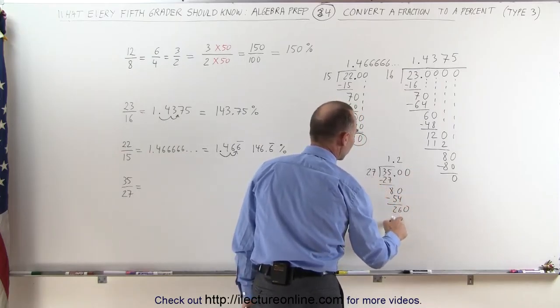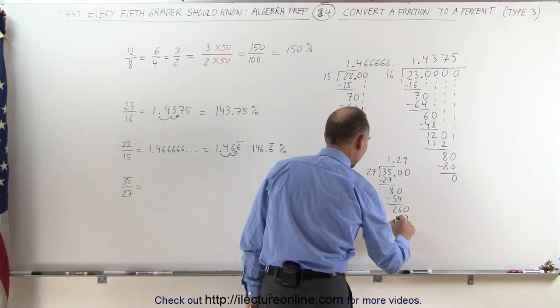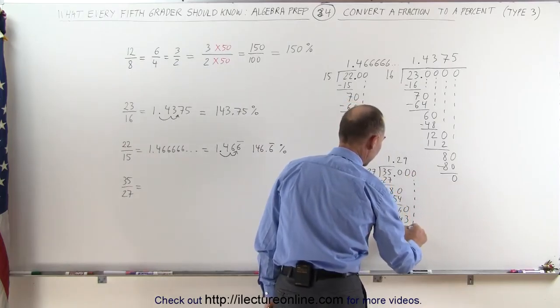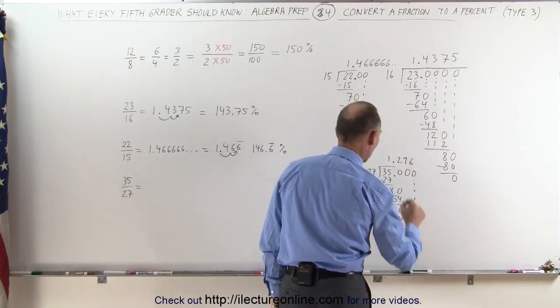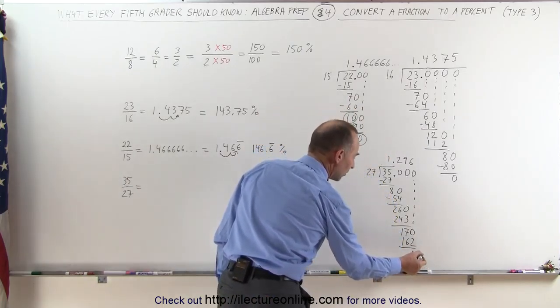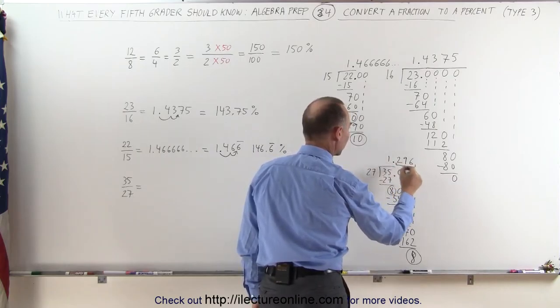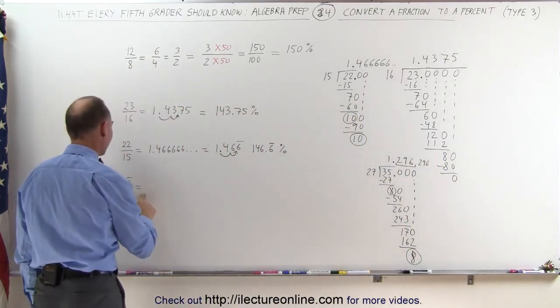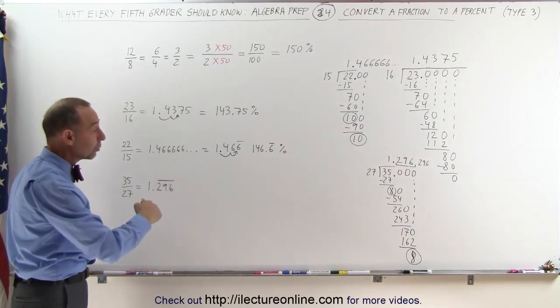Add another 0. 27 goes into 260 9 times. 9 times 7 is 63, carry 6. 9 times 2 is 18 plus 6 is 24. Remainder is 17. 27 goes into 170. Let's see here. That would be 5. Let's try 6 times. 6 times 7 is 42, that's 20, that's 16. Remainder is 8. And now notice that I have the same remainder here as I have over here, which means that those last three numbers are going to keep repeating. So 1.296 and 296 and 296 forever, which means I can now write my fraction here as 1.296 with three lines, with a line over those three numbers, meaning that those three numbers will continue to repeat forever.